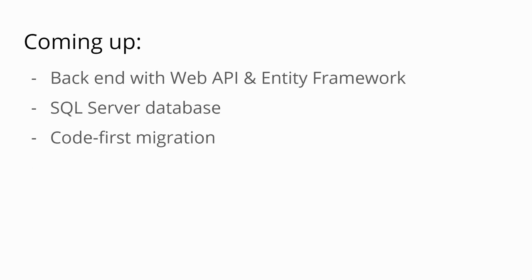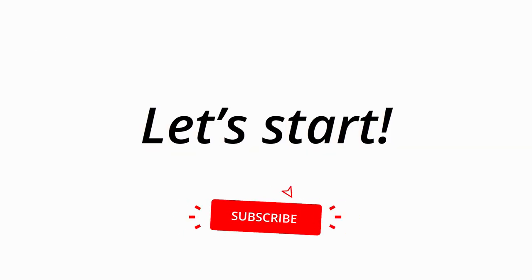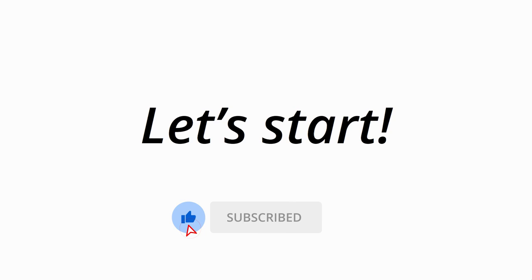We will also build the backend of this application with a Web API and Entity Framework. The Web API provides all the controllers — these are the web services in essence, which are called from the Blazor WebAssembly client application. Entity Framework is used to create a SQL Server database with all the necessary tables using code-first migration, so all your data will be stored persistently. But the backend will be covered later; we will focus on the client first.